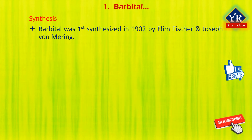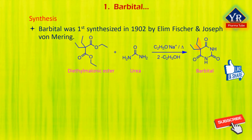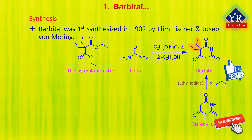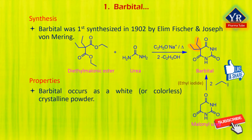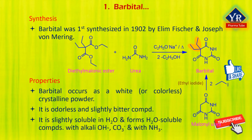Barbitol was first synthesized in 1902 by German chemists Emil Fischer and Joseph von Mering. It was first prepared by condensing diethyl malonic ester with urea in the presence of sodium ethoxide, or by adding at least 2 molar equivalents of ethyl iodide to the silver salt of malonylurea, which is known as barbituric acid. Barbitol occurs as a white crystalline powder or colorless crystals; it is odorless and slightly bitter, and slightly soluble in water.